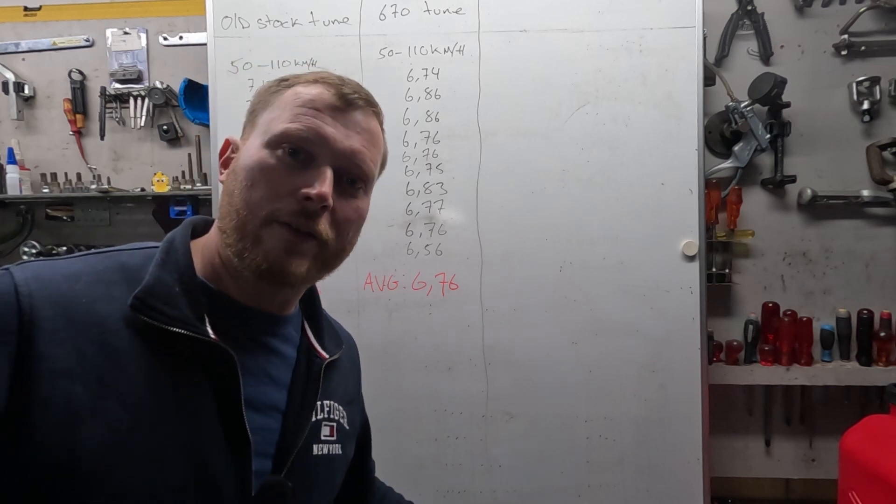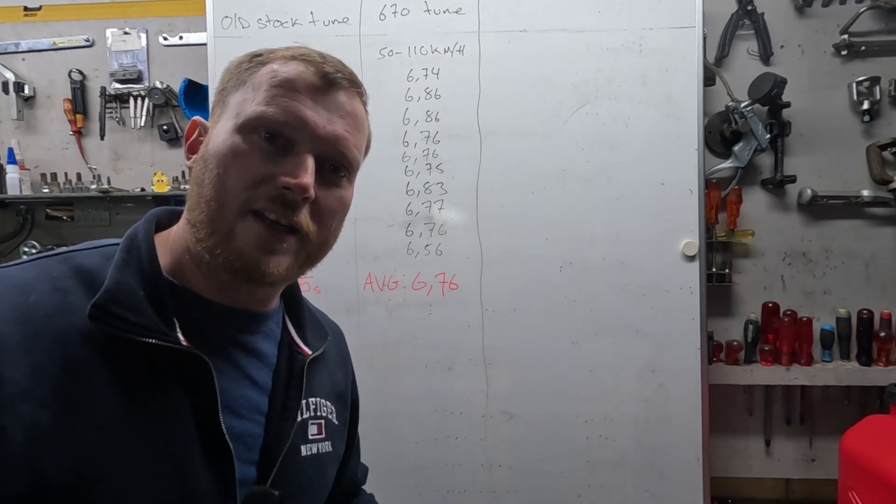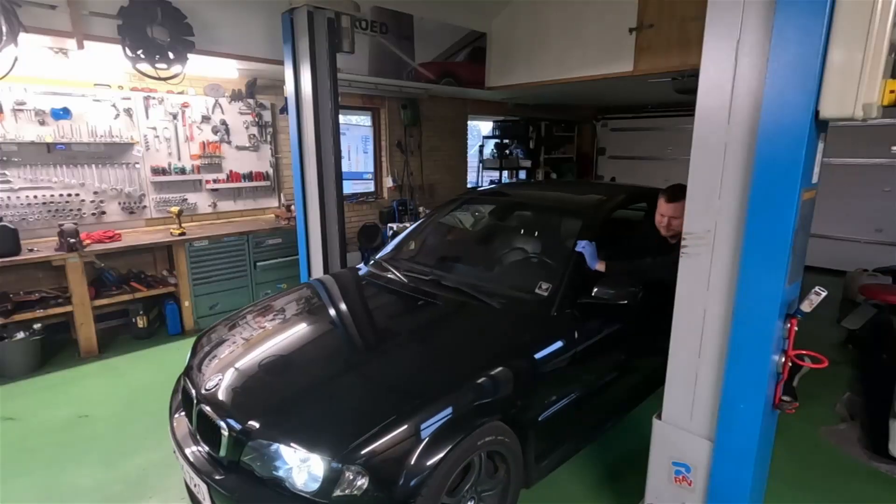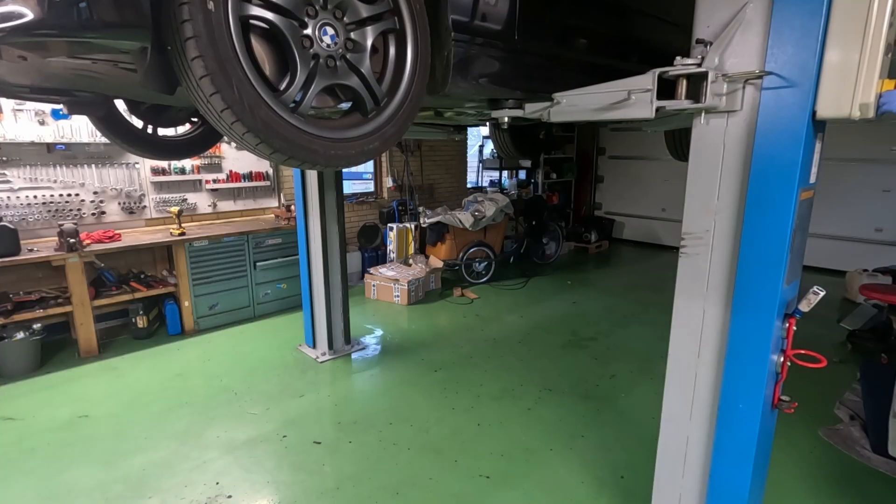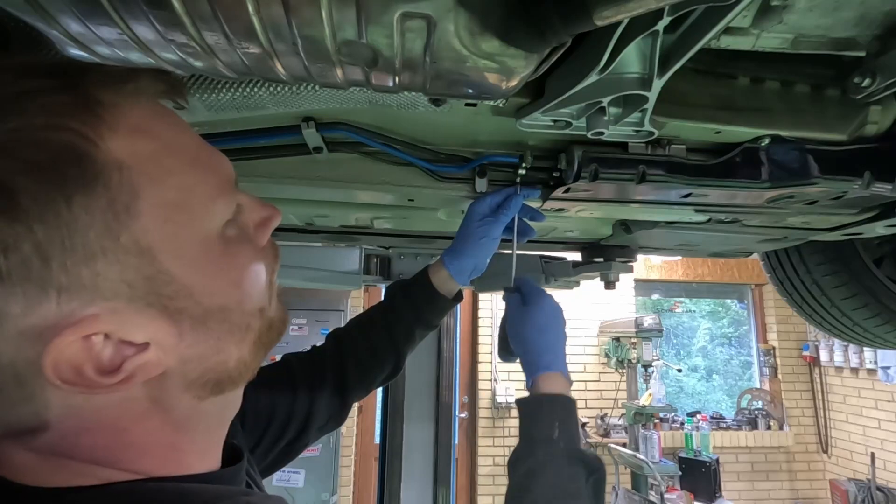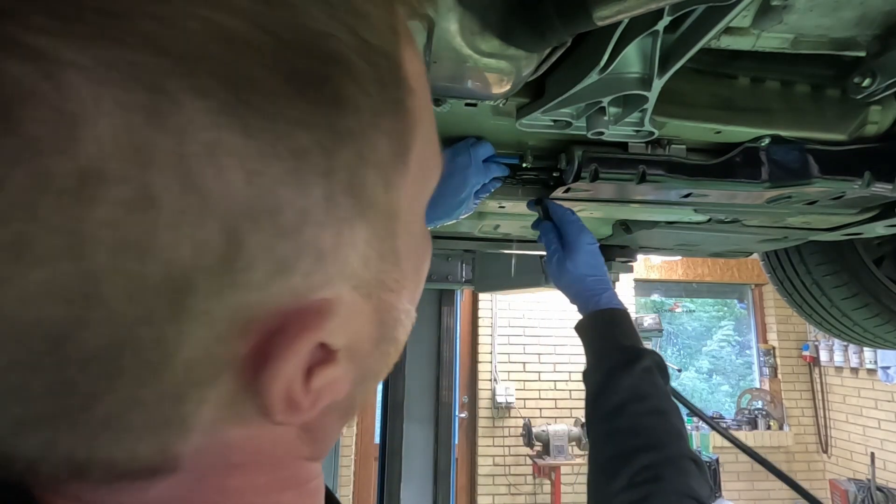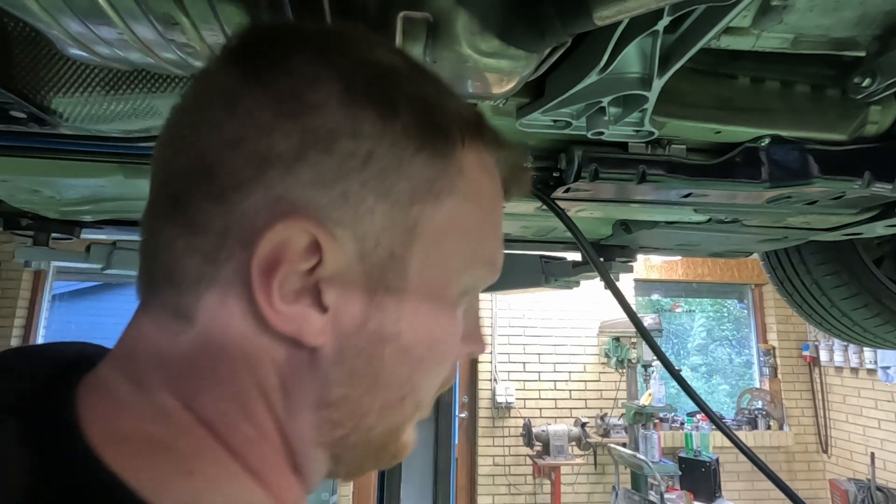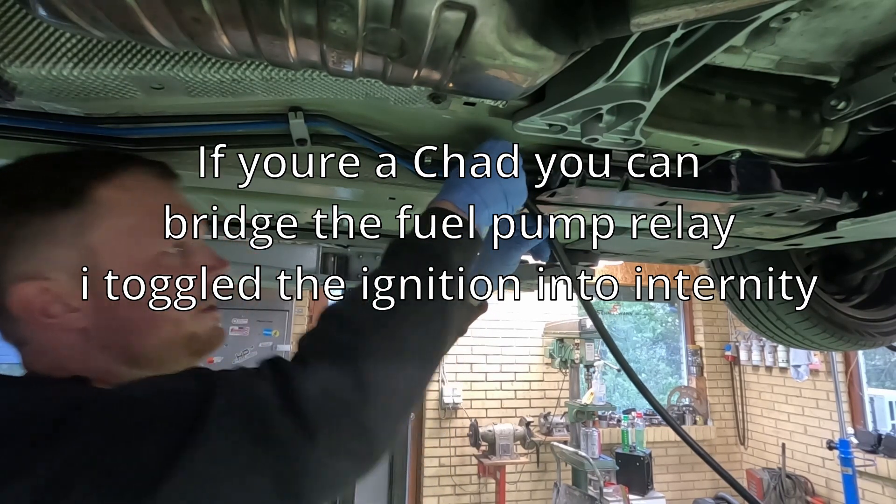Let's drain the fuel tank and then fill it up with the V-Power. Drive to the nearest gas station that sells V-Power. Fill up some more. Drive. Do the same tests. And I have two fuel canisters for it. And we'll install a different hose here. And then toggle the ignition.